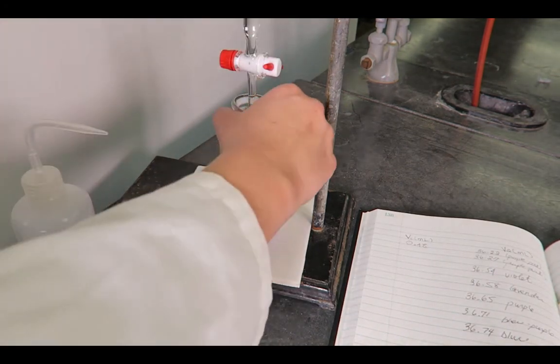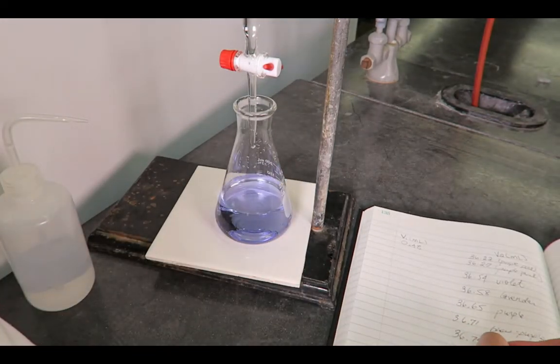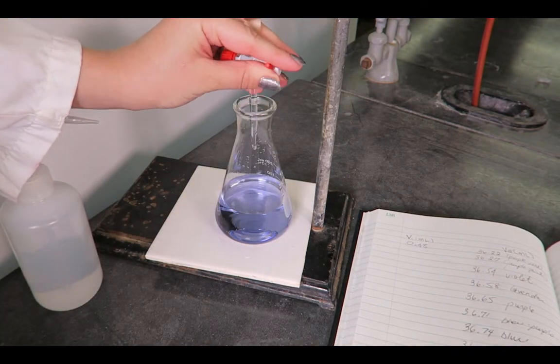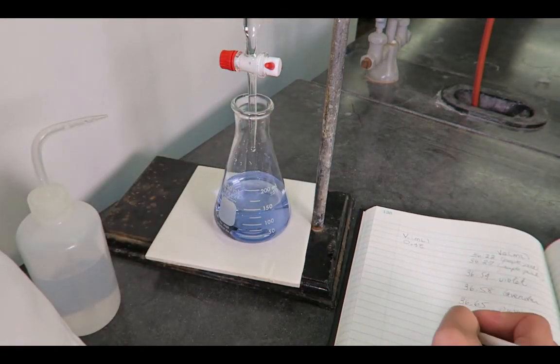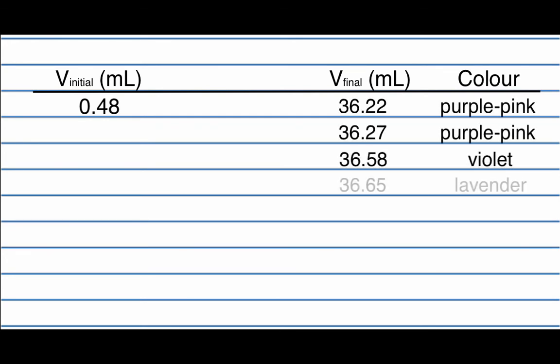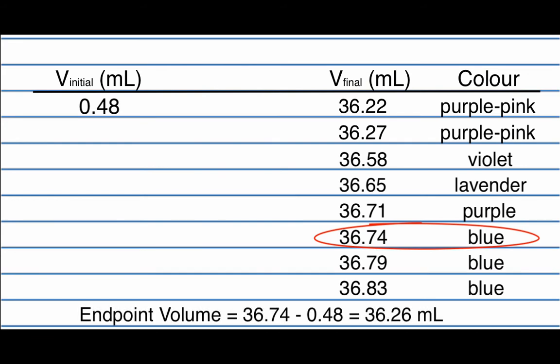Continue adding drops and record the burette volume and indicator color until the indicator color remains constant. The endpoint is then identified as the burette reading in your laboratory notebook that corresponds to the greatest indicator color change. The volume of titrant delivered is the difference between the final and initial readings.